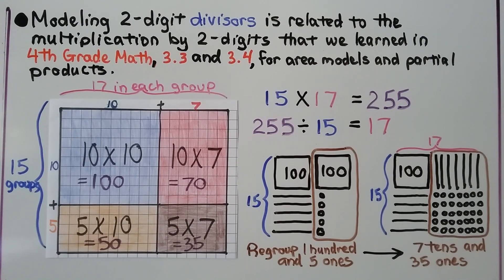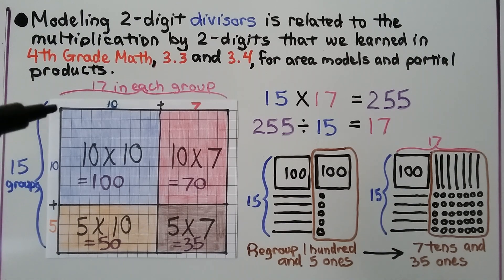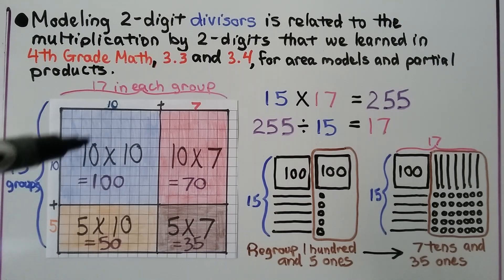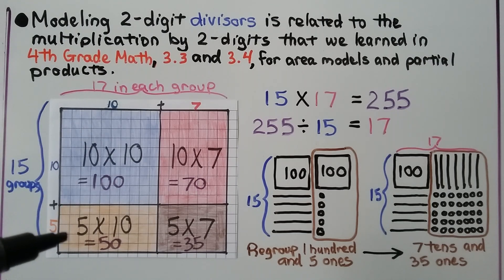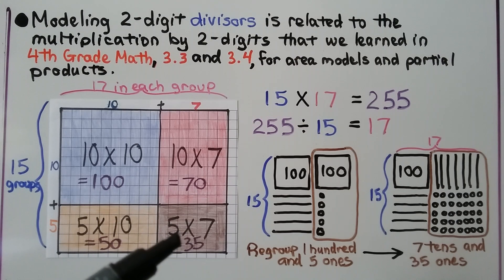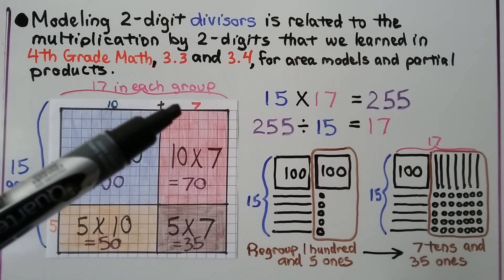Modeling two-digit divisors is related to the multiplication by two digits that we learned in 4th grade math — lessons 3.3 and 3.4 — for area models and partial products. We actually used this drawing. If we have 15 times 17, we put a 10 times 10 here for 100, and a 5 times 10 here for 50 — that makes 15 groups of 10. We can add a 10 times 7 here for 70, and a 5 times 7 here for 35.